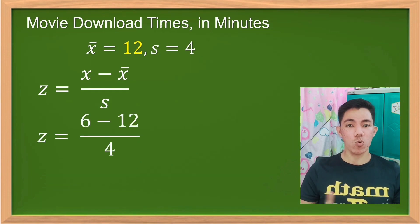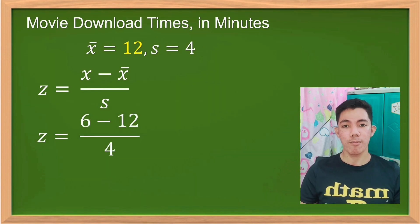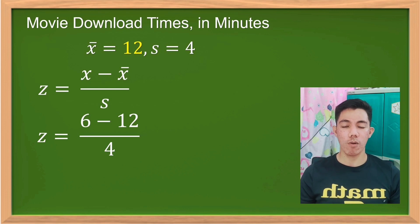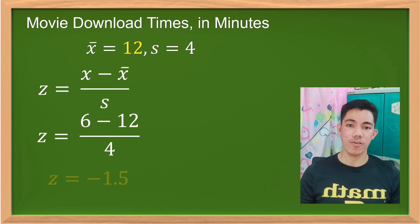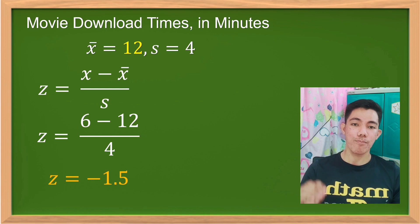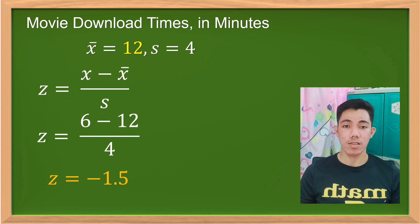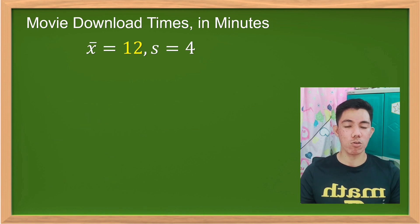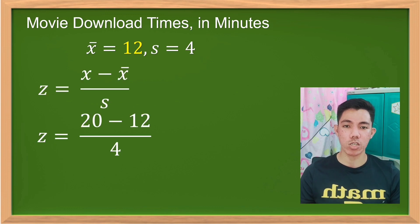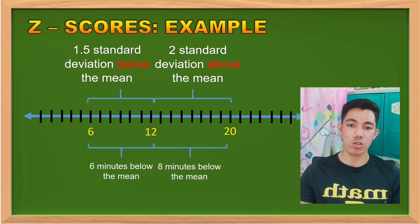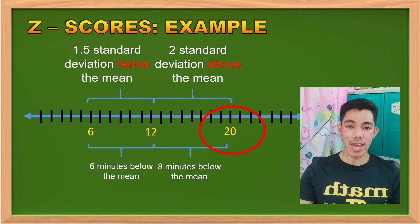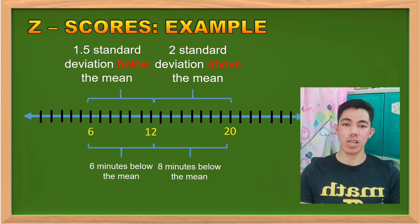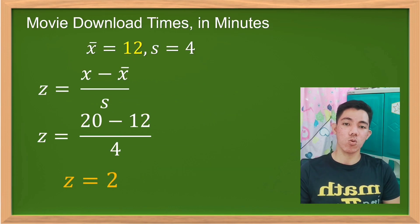So we have the first X, that is the 6: Z = (6 minus 12) all over 4 — that is equivalent to negative 1.5. So ibig sabihin, pag sinabi nating negative, that is below the mean. On the other hand, yung download mo na 20 minutes: Z = (20 minus 12) all over 4, that is 8 over 4, which is equivalent to 2.